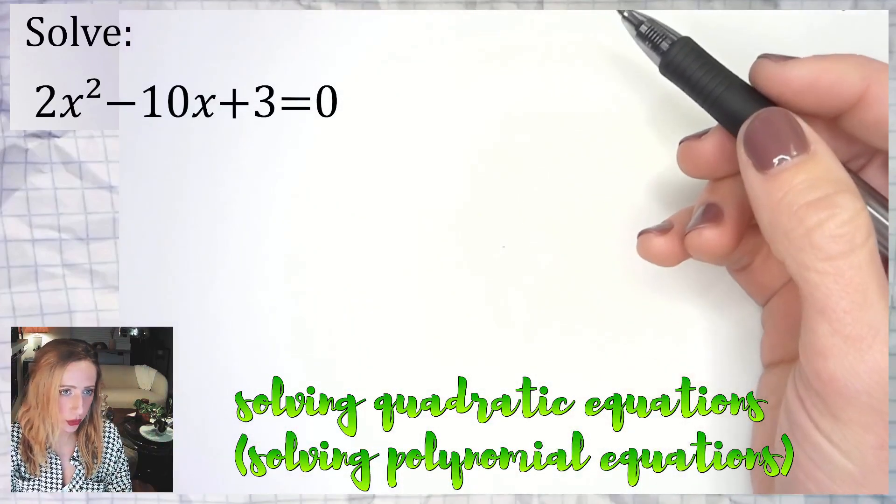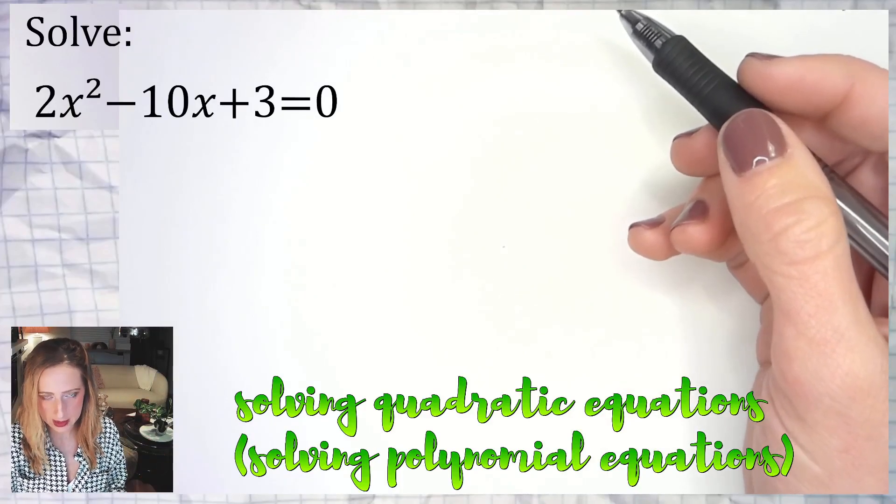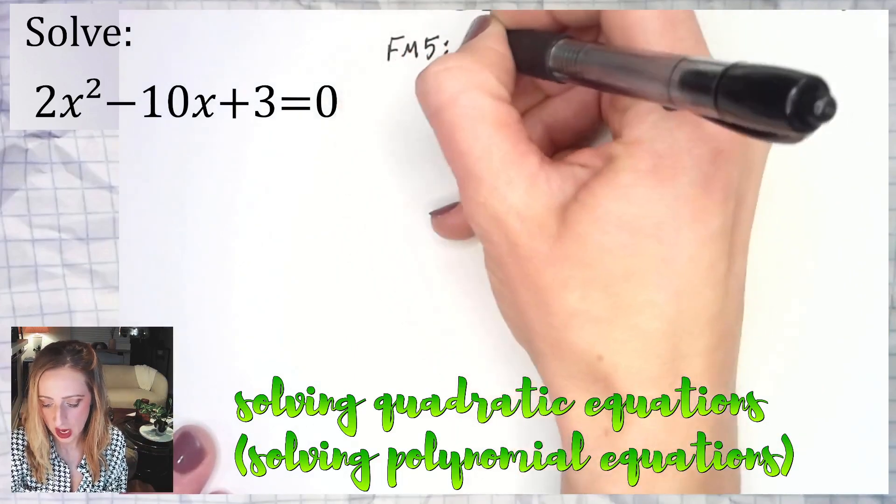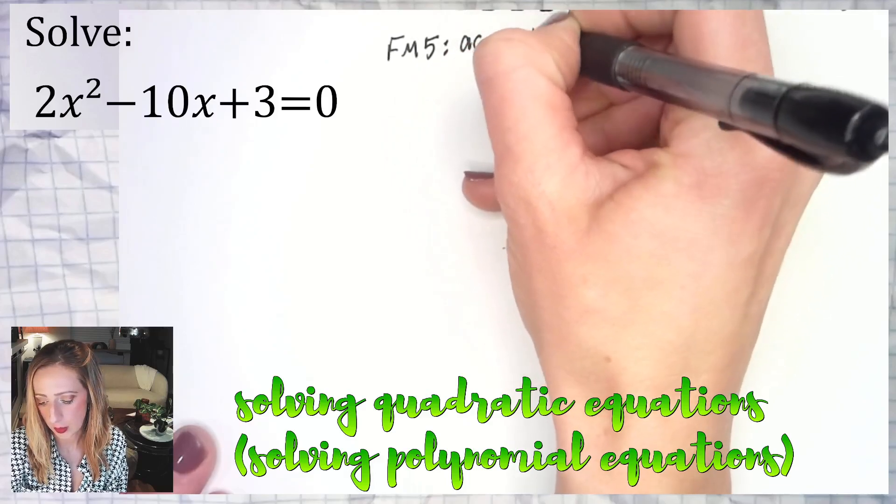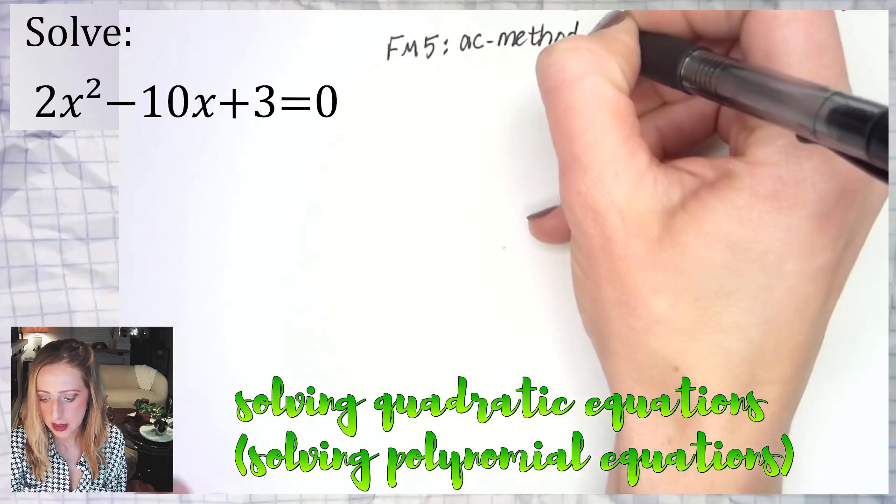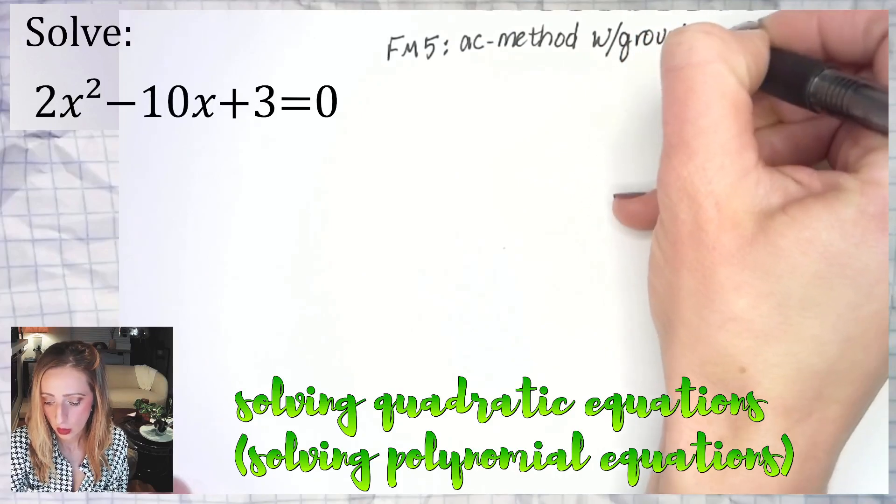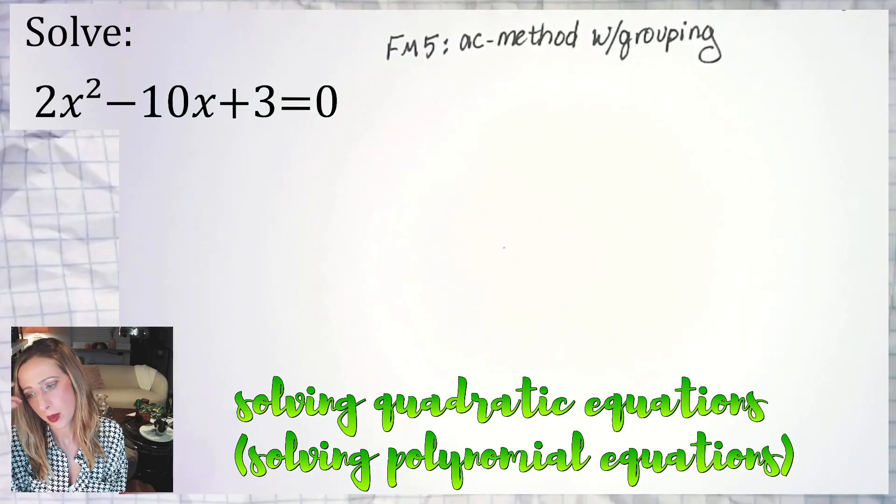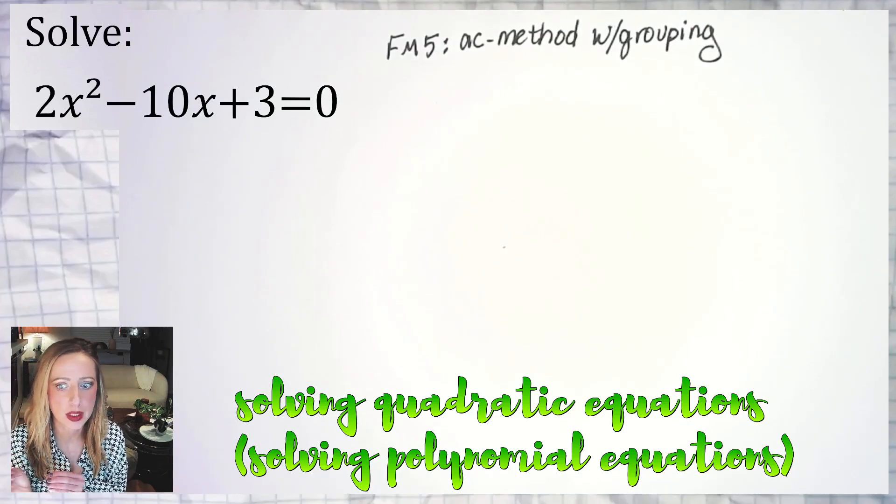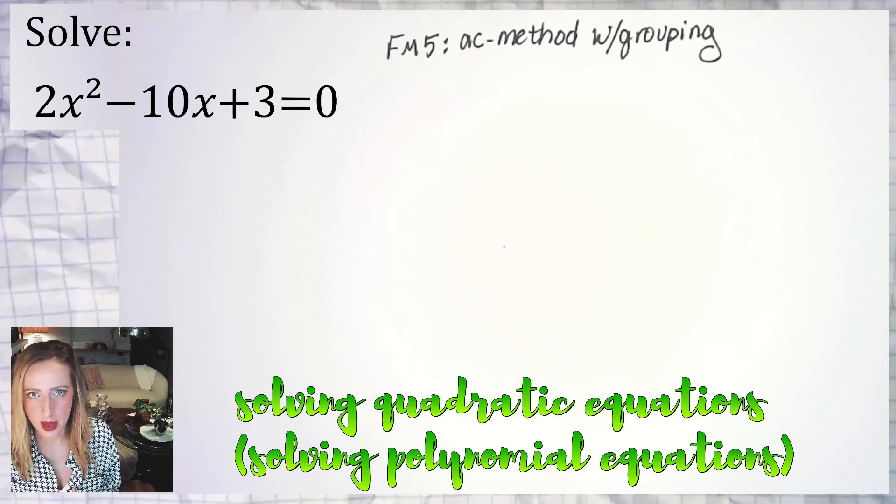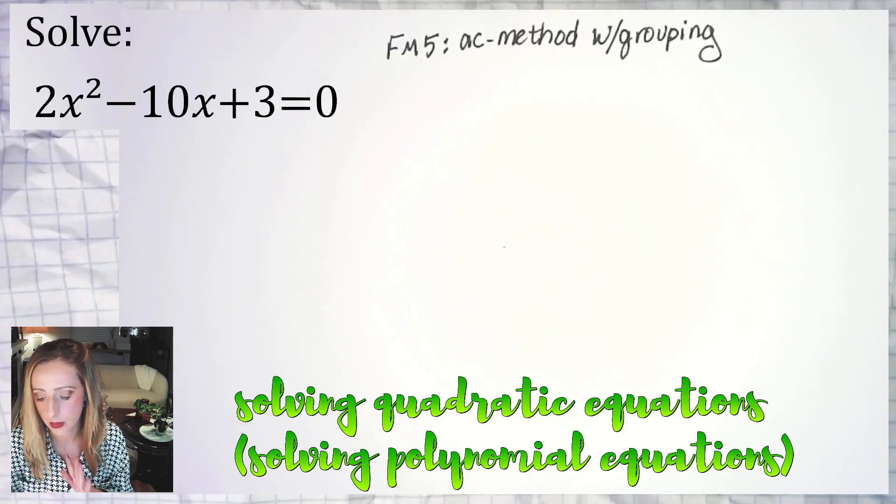I look at this one and it screams to me factoring method five, which is the AC method and grouping. You might know it by a different name. Now, if you are solving and you're not great at the AC method, fun fact, quadratic formula will work every time for a quadratic. The problem is you still need to know how to factor a quadratic because there are going to be cases where you'll have a quadratic expression and the directions are not to solve, but they are to just factor.